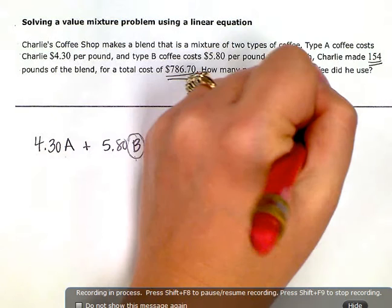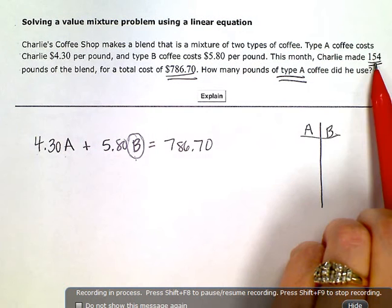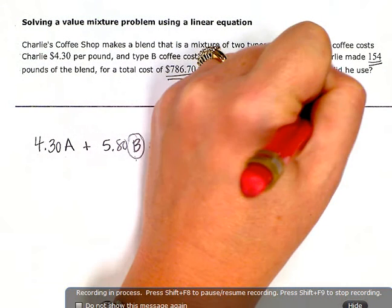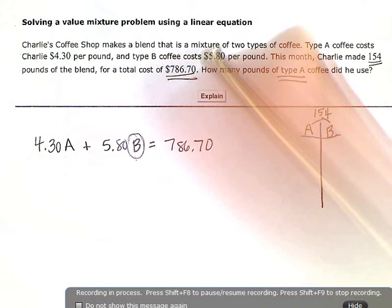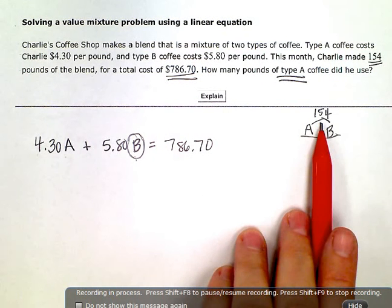So blend A or coffee A, coffee B, and this is where the 154 pounds comes in. So I know together, however many pounds of A and however many pounds of B, they total 154.